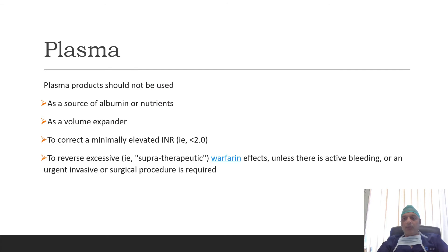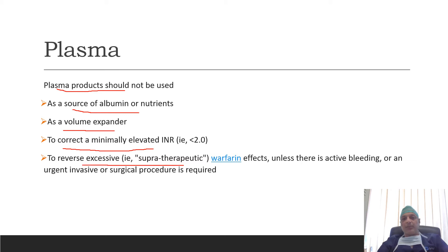It is important to understand when plasma products should not be used. It should not be used as a source of albumin or nutrients, it should not be used as a volume expander, it should not be used to correct a minimally elevated INR — meaning if INR is less than 2 — and it should not be used to reverse excessive supra-therapeutic warfarin effect unless there is active bleeding or an urgent invasive or surgical procedure required.